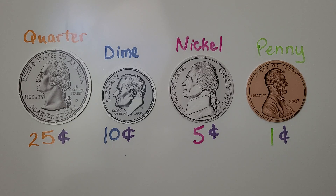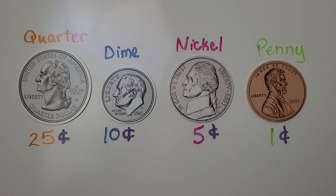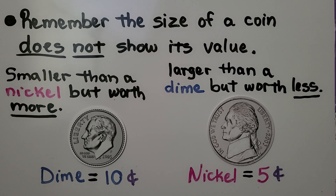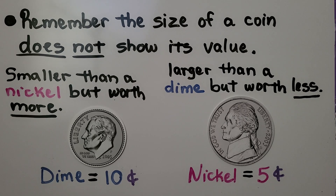We've learned in the last couple of videos: a quarter is worth 25 cents, a dime is worth 10 cents, a nickel is worth 5 cents, and a penny is worth 1 cent. Remember, the size of a coin does not show its value. Here's a dime — it's 10 cents, and it's smaller than a nickel but worth more. Here's the nickel — it's worth 5 cents. It's larger than a dime but worth less. So don't confuse the size of a coin with its value.